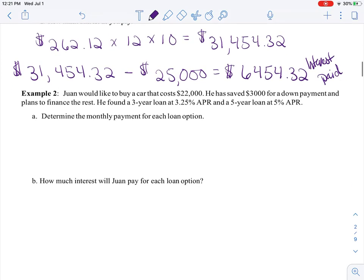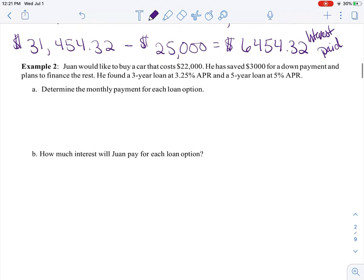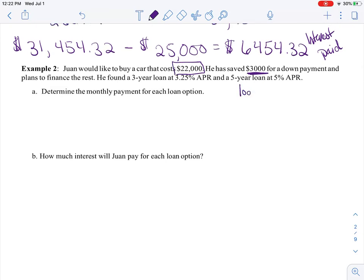Okay, so let's go to Example 2. Juan would like to buy a car that costs $22,000. He has saved $3,000 for a down payment and plans to finance the rest. Okay, right there, off the bat, stop reading and realize: what are you going to take the loan out for?